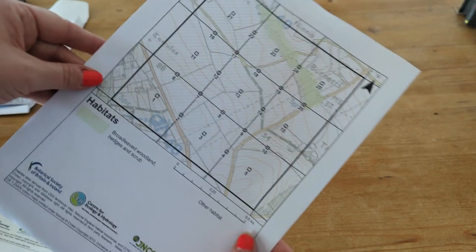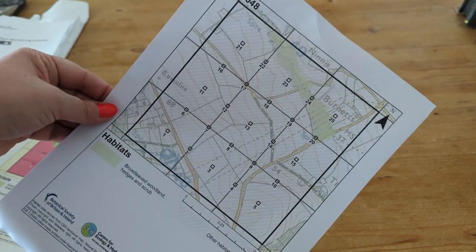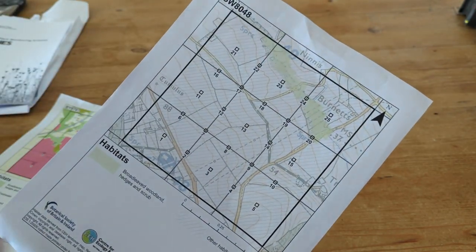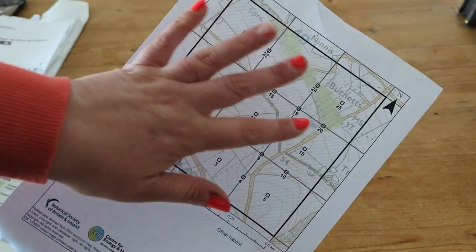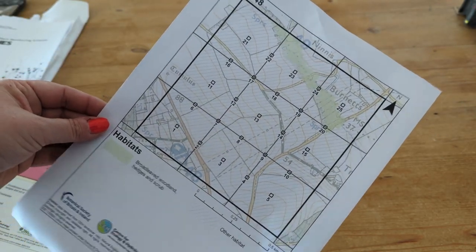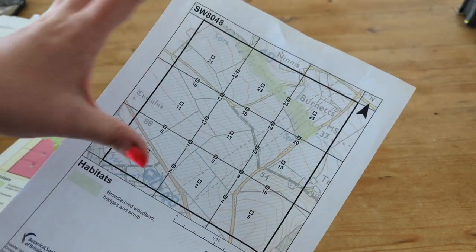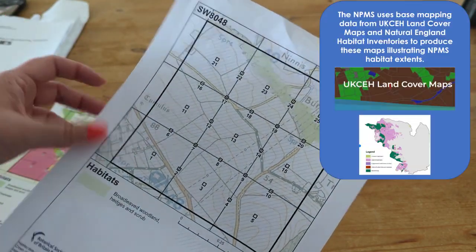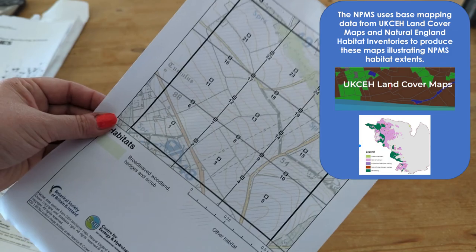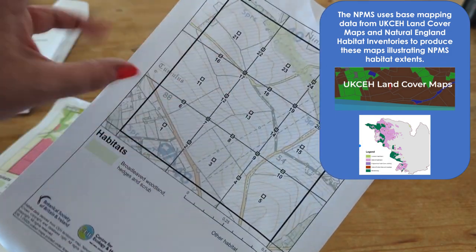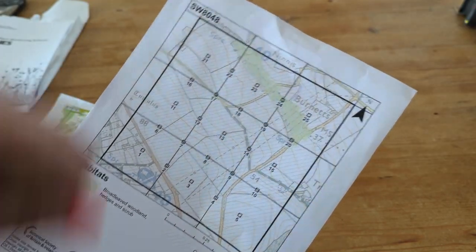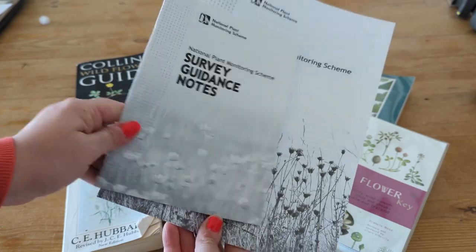However, it might be that you've got one a little bit more on the bare side — maybe just a little bit of broadleaf woodland shown, or absolutely none of the habitat colors. That's because it's using a general knowledge of where habitats might be, but they haven't necessarily been confirmed against what's really on the ground, so that's where we need to go out and have a look.